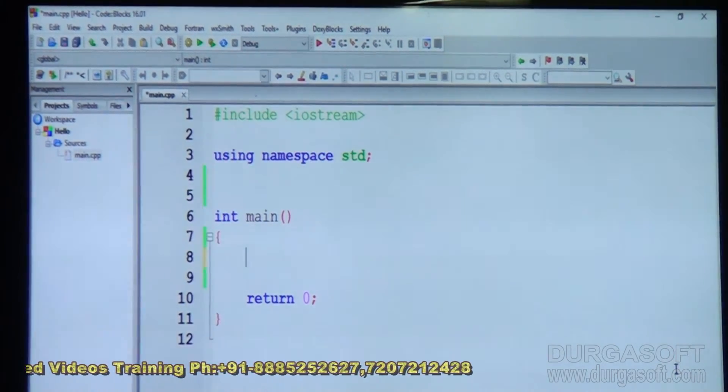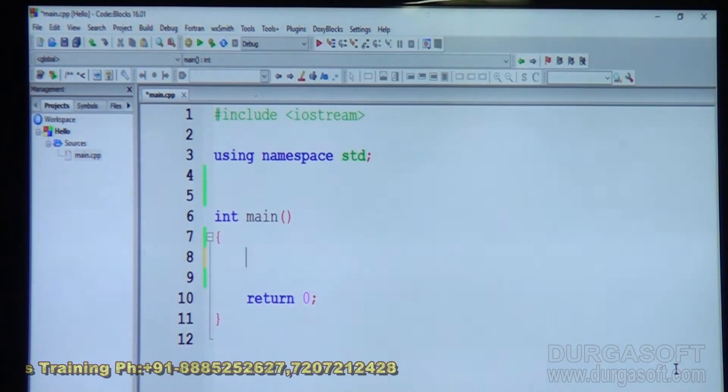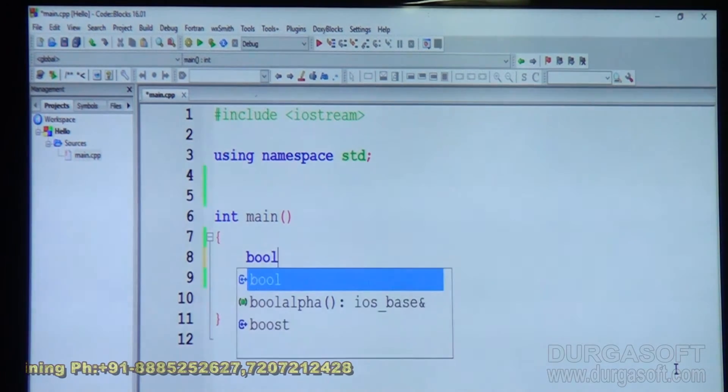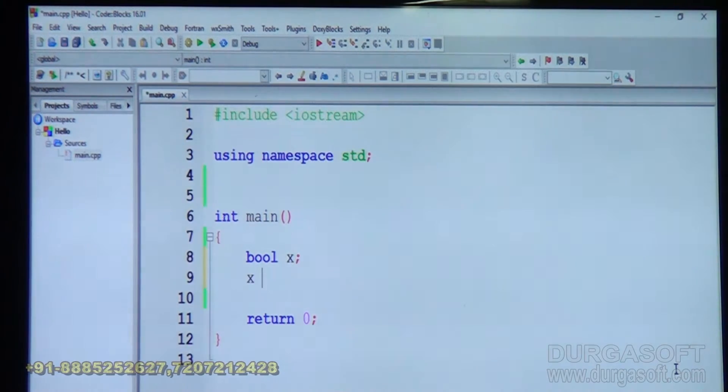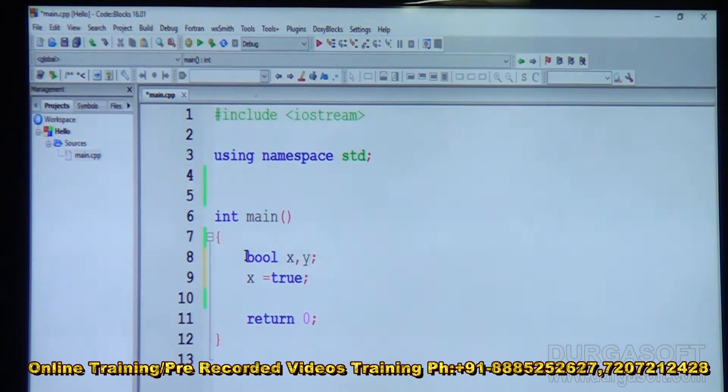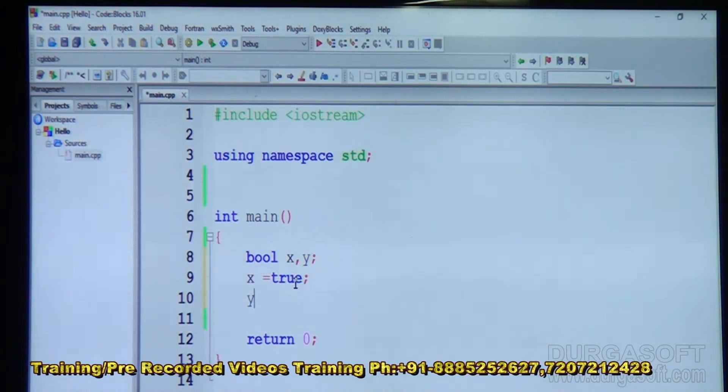And another difference is a new data type came here called boolean type data variable added in c plus plus. So we can have a boolean variable x. In this we can store x is equal to a boolean variable means values 0 or 1 are true or false. You can say true. Suppose let us have y. X and y. Suppose there are two boolean variables. The type is boolean variables. And the values can be true or false. Suppose x is equal to true. y is equal to false.